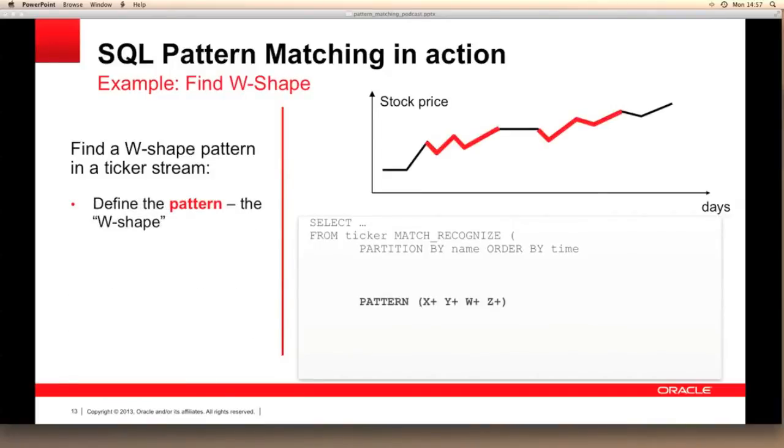The next step is to define the pattern for our W-shape. In this case we need to look for four specific data points and these points need to occur in a specific order. Therefore our pattern clause is X plus followed by Y plus followed by W plus followed by Z plus. What do X, Y, W, and Z represent?